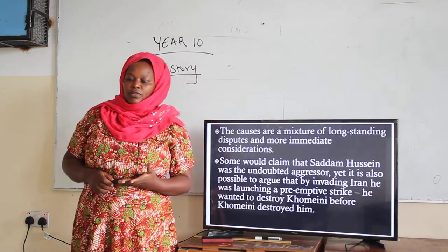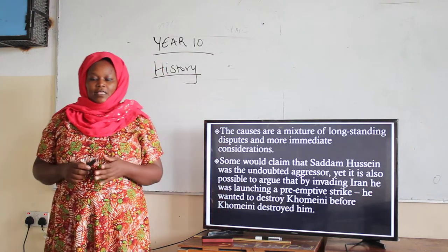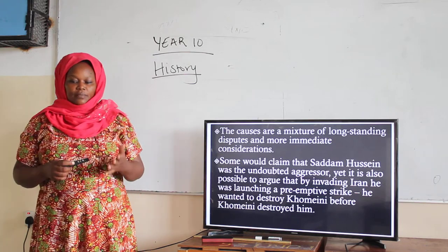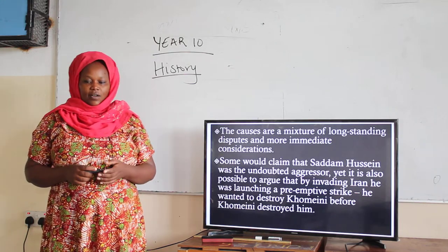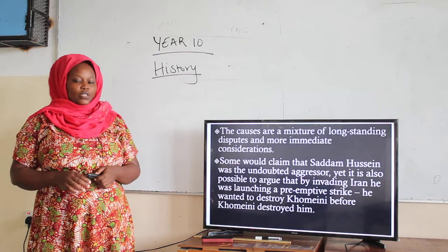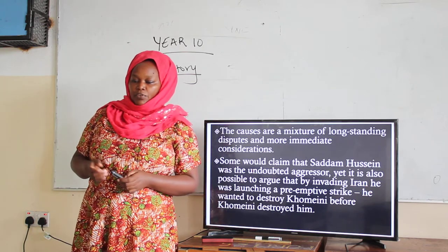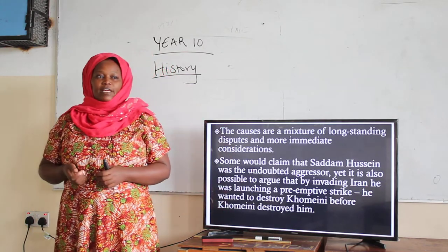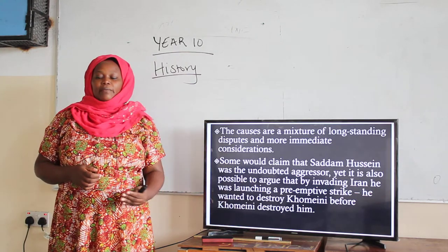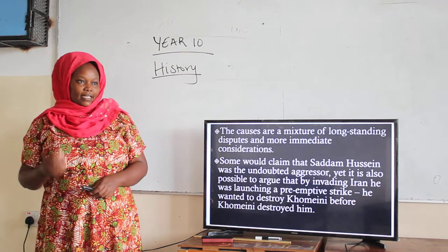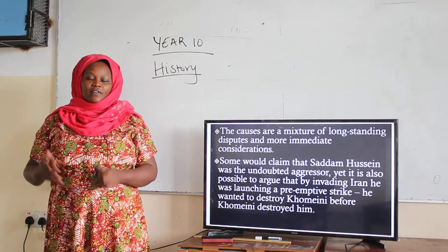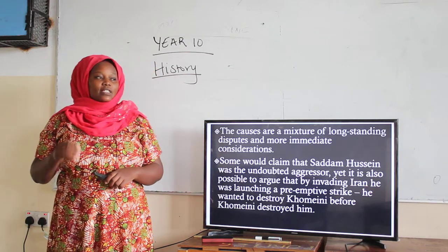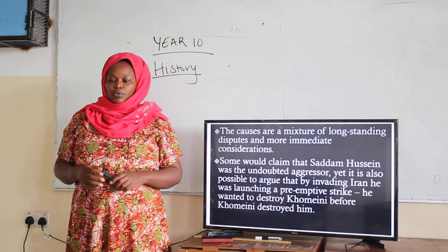Yet it's also possible to argue that by invading Iran, he was launching a preemptive strike — he wanted to destroy Khomeini before Khomeini destroyed him. If you know you have an enemy, sometimes you may attack your enemy before your enemy attacks you. So they had some regions they were not able to agree on, and those are the ones we are going to start looking at.